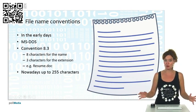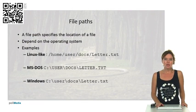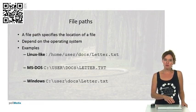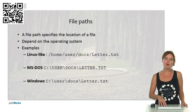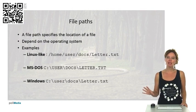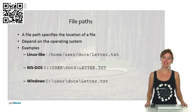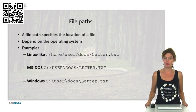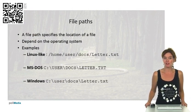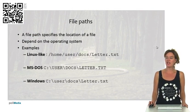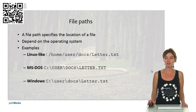File paths are paths that specify where the file is located on your computer. How it looks depends a little bit on the operating system. Here we see three examples for Linux-like, MS-DOS-like, and Windows-like operating systems. It's just to give you a feel for how it looks, so if you come across it you know what it is—it's a file path that indicates where the file is located on your computer.